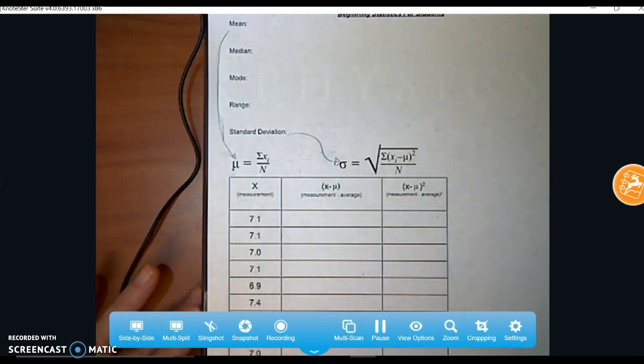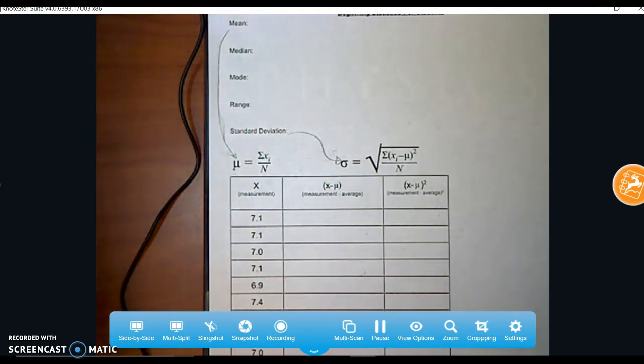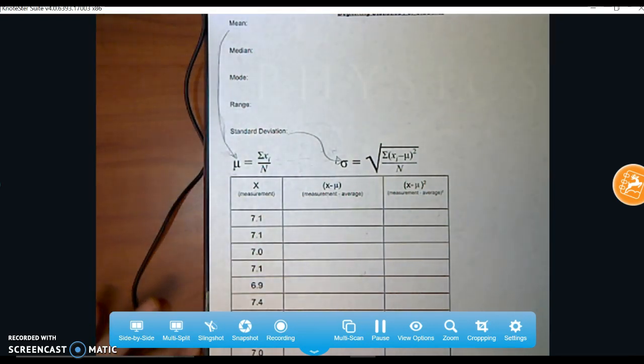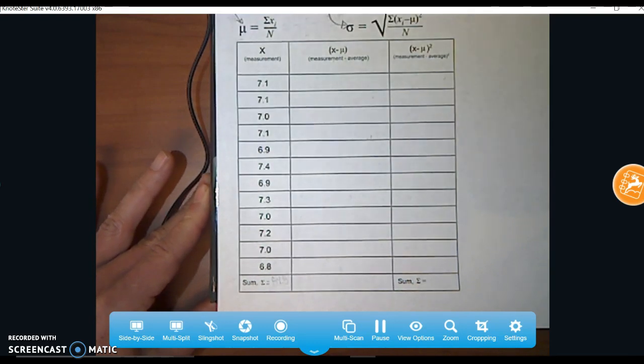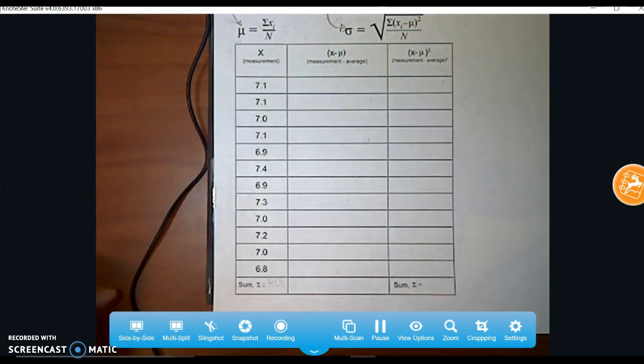So again, your data is different than mine. So you're going to do it with yours. And again, expect to pause so that you can do it. The first thing we're going to do is we're going to calculate the average of your data set. And that's a pretty simple thing to do. Most of us have done averages before.